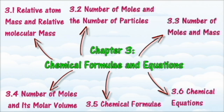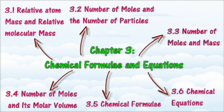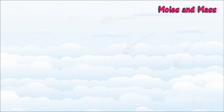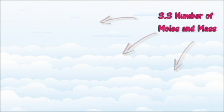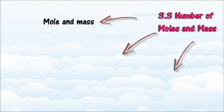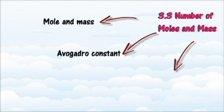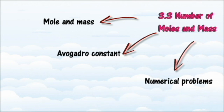In Section 3.3, we will learn about the relationship between the number of moles with its mass. At the end of this section, you should be able to state the meaning of molar mass, relate the molar mass to the Avogadro Constant, relate the molar mass of a substance to its relative atomic mass or relative molecular mass, and solve numerical problems to convert the number of moles to the number of particles of a given substance, and vice versa.